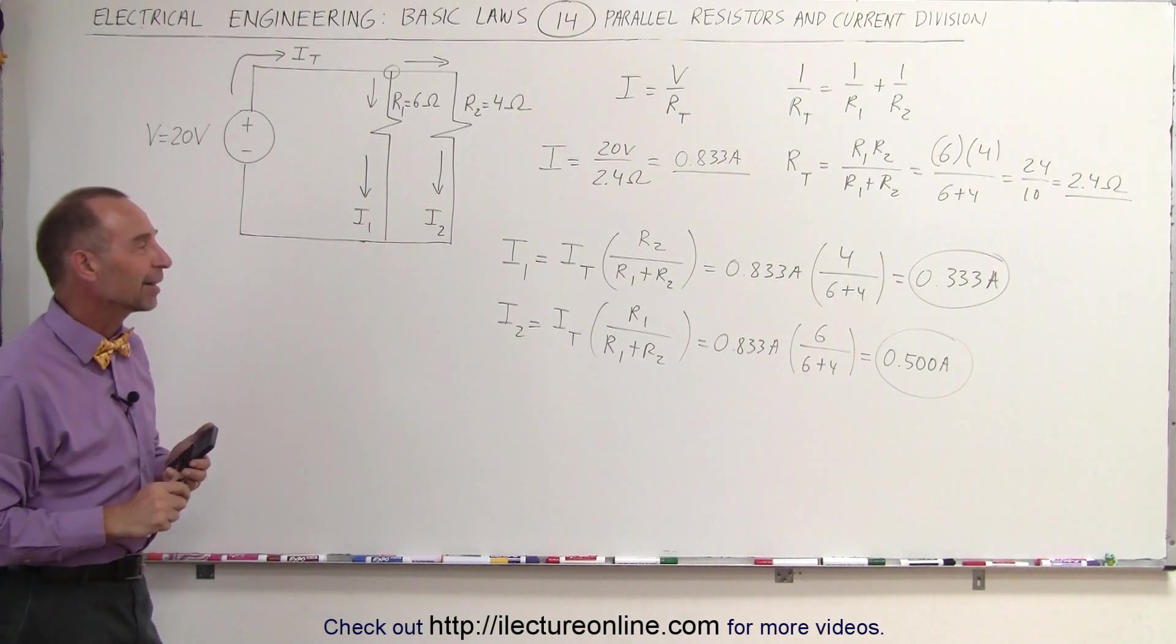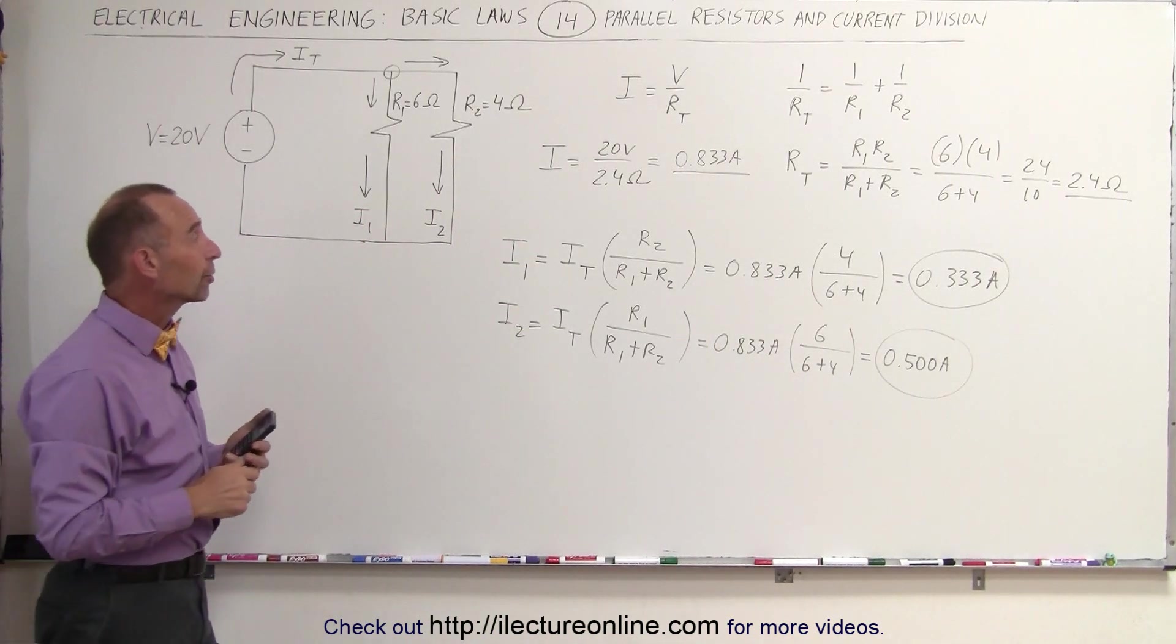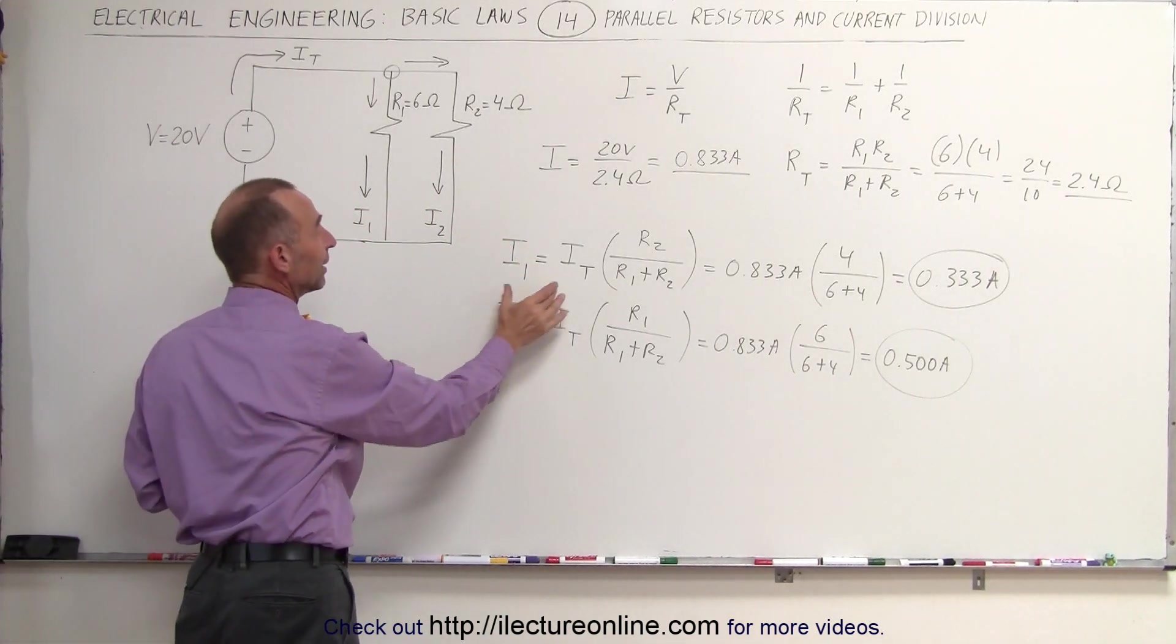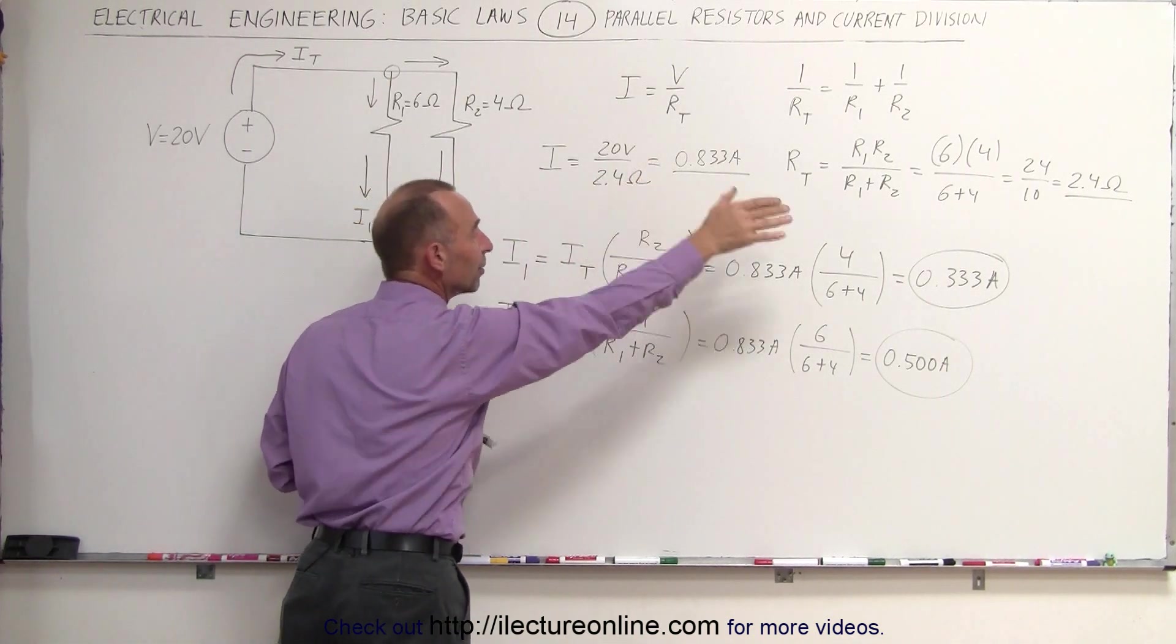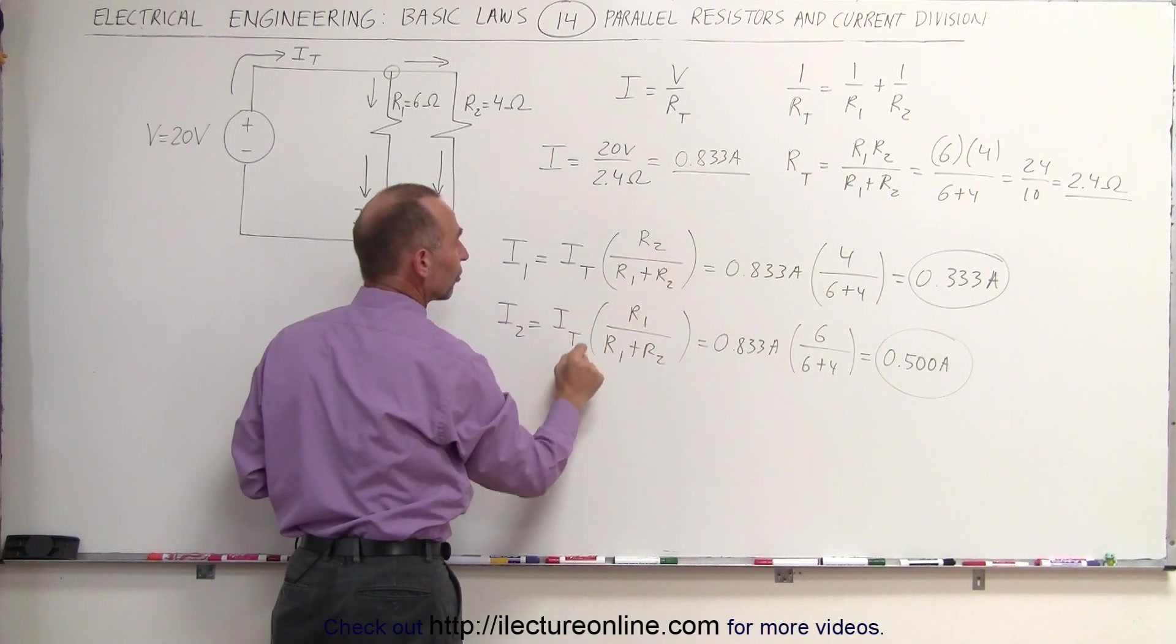That's why we write it like this. To find the current in any branch, you simply take the total current coming to the branch, then multiply times the ratio of the resistance in the other branch divided by the sum of the two resistors.